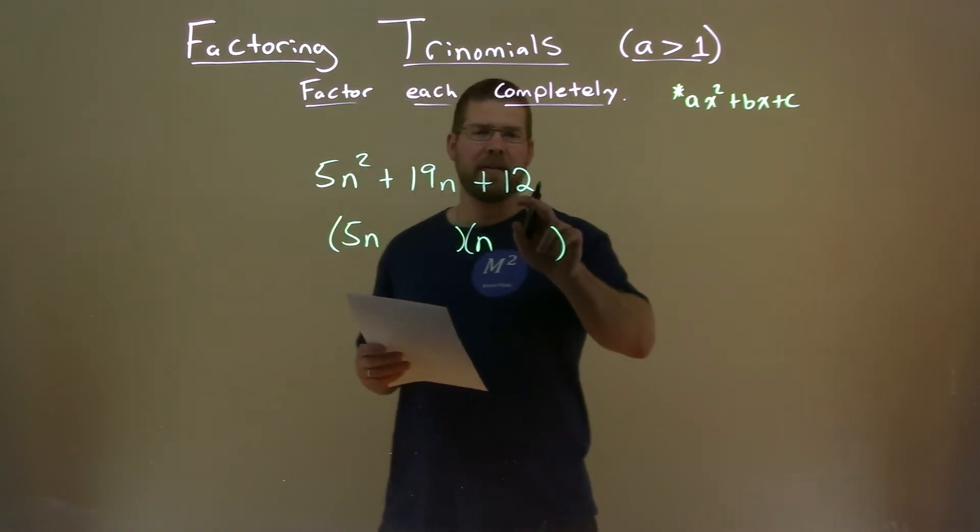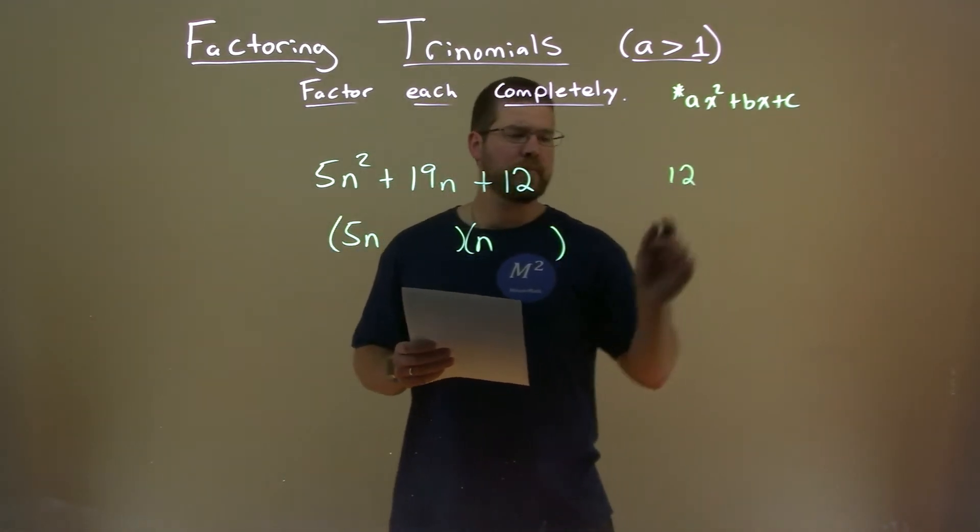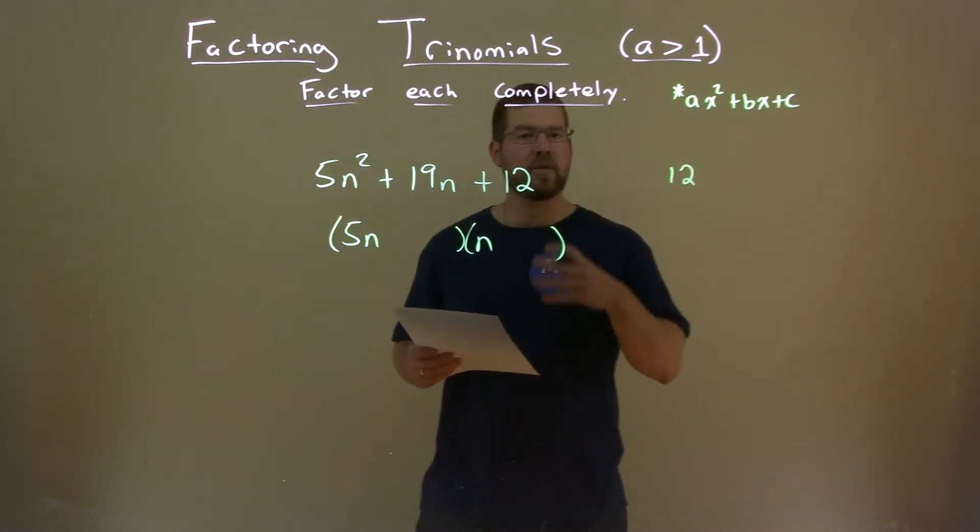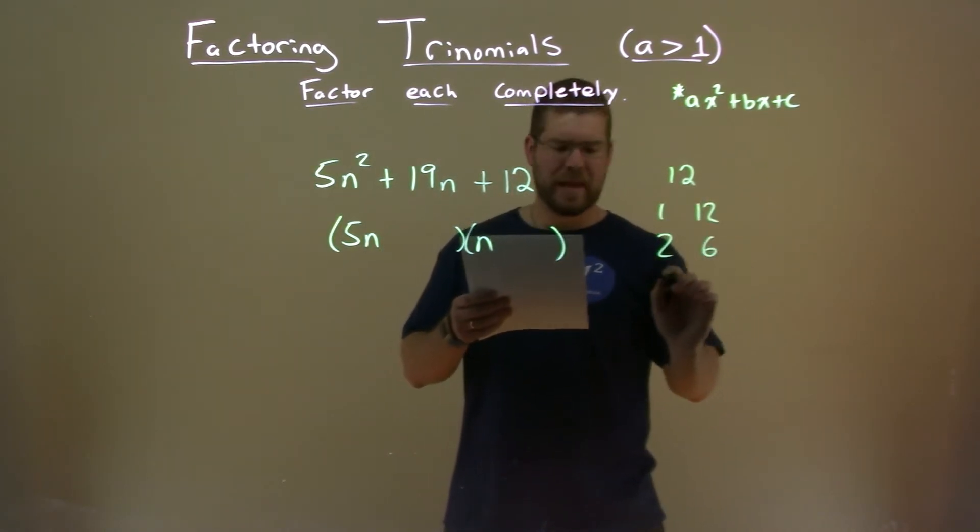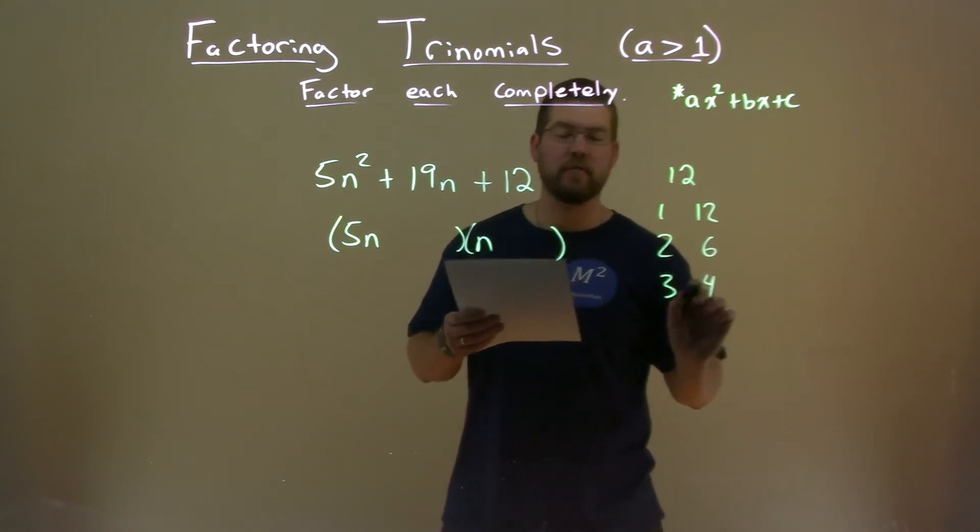Well, with that, I then have to look at my c value, which is 12, and I want to write the list of the two numbers that multiply it to be 12. That's 1 and 12, 2 and 6, and 3 and 4.